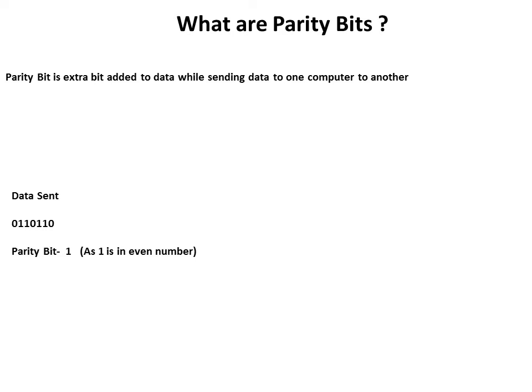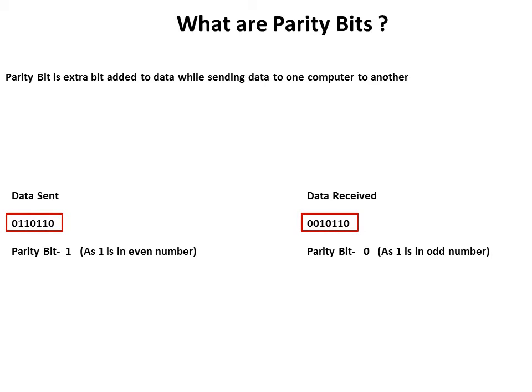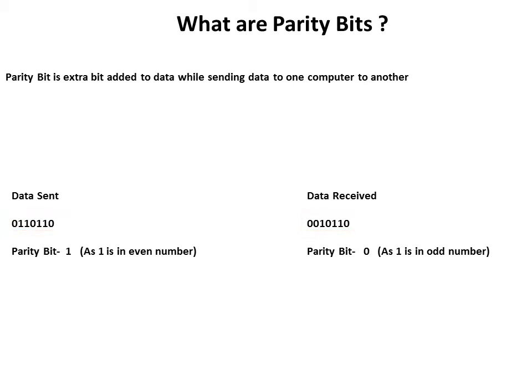Now let us see the data received. There is a difference between the data sent and the data received, and hence there is a difference between the parity bit for the data sent and the parity bit for the data received. By comparing the two parity bits, we can see that there was an error.